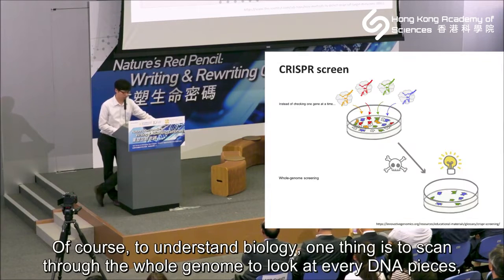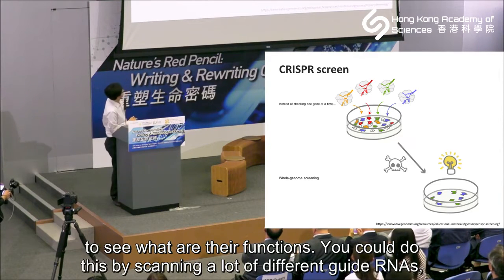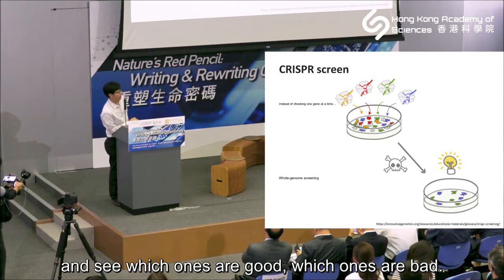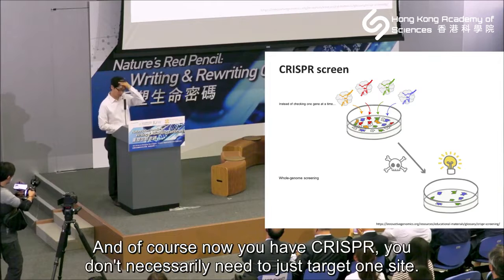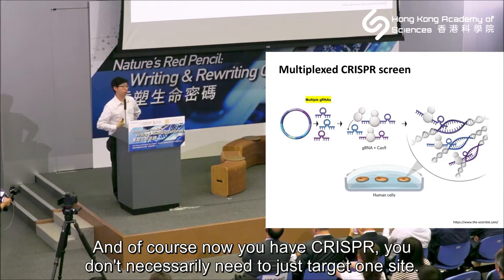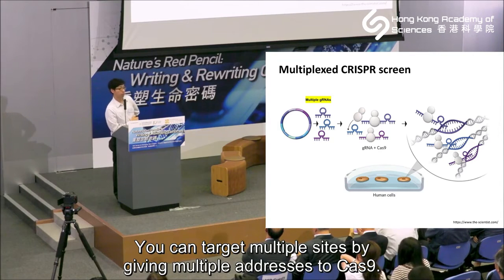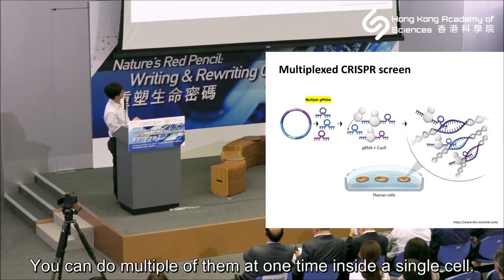With the CRISPR tool to access the genome, one thing you can do is scan through the whole genome, look at every DNA piece, and see what their functions are. You could do this by scanning many different guide RNAs and see which ones produce good or bad effects - perhaps identifying anti-cancer genes based on this. With CRISPR, you don't necessarily need to target just one site. You can target multiple sites by giving multiple addresses to Cas9, which will recognize each sequence, go there, and make the cut. You can do multiple edits at one time inside a single cell.